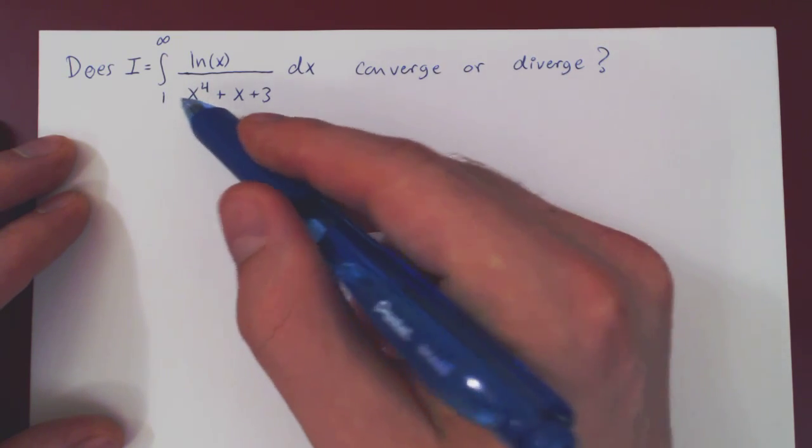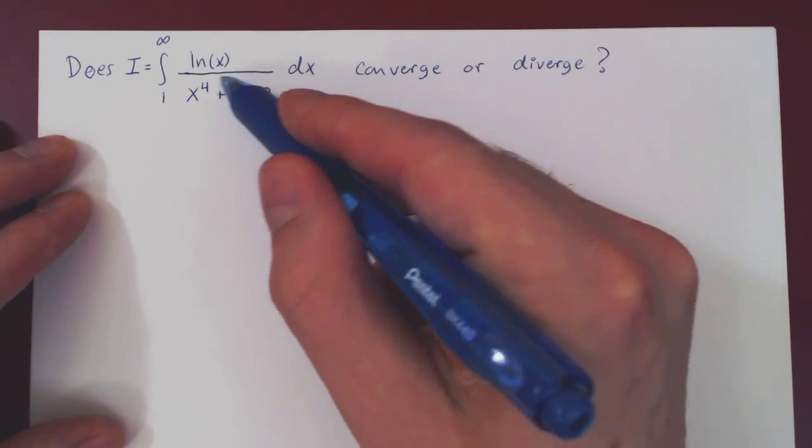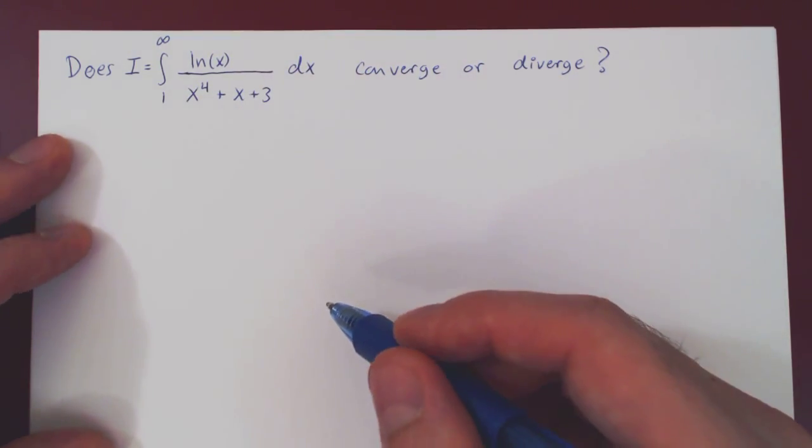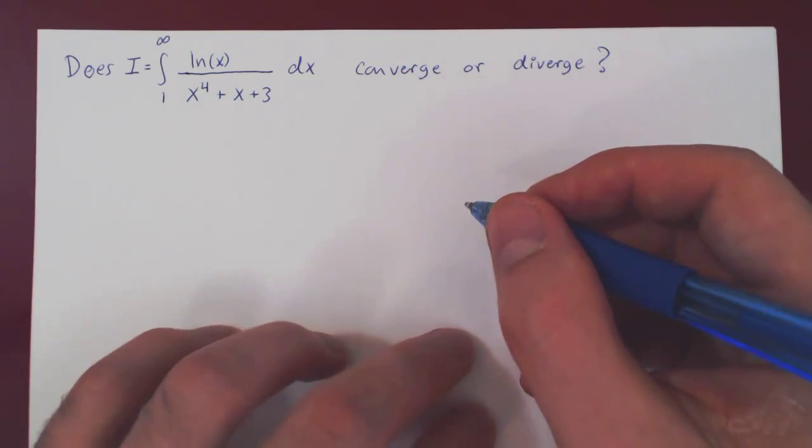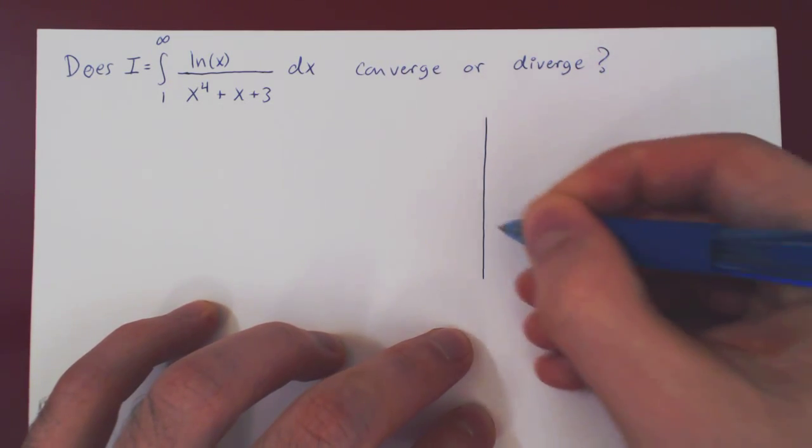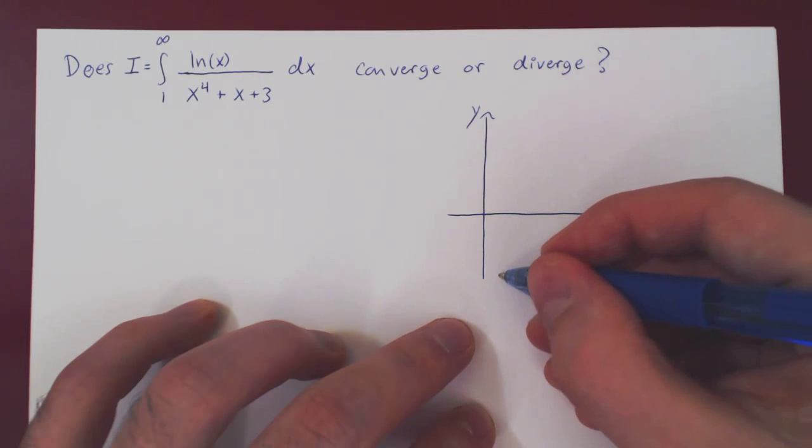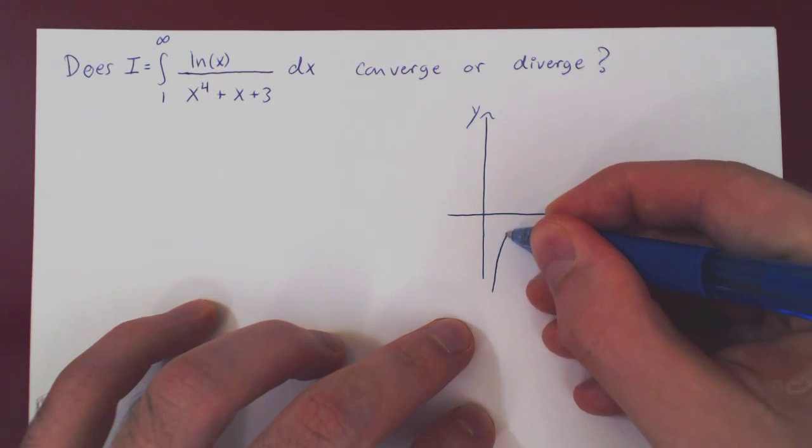As x is bigger than 1, clearly our denominator is positive and if you sketch the graph of ln of x, ln is negative from 0 to 1.